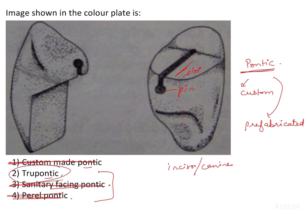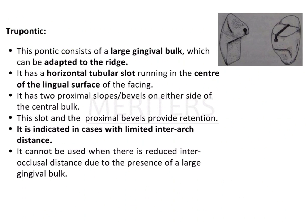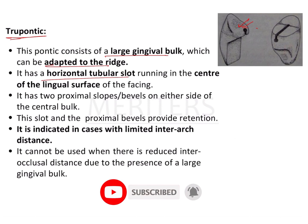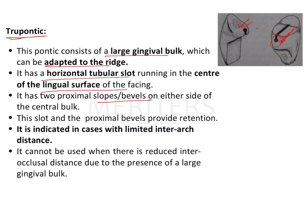The remaining option is true pontic. True pontic has a large gingival bulk, as we can see in the image. Because these are prefabricated pontics, they need to be adapted to the surface of the ridge and the tooth accordingly. It has a horizontal tubular slot running in the center of the lingual surface of the facing, and two proximal slopes or bevels on either side of the central bulk.